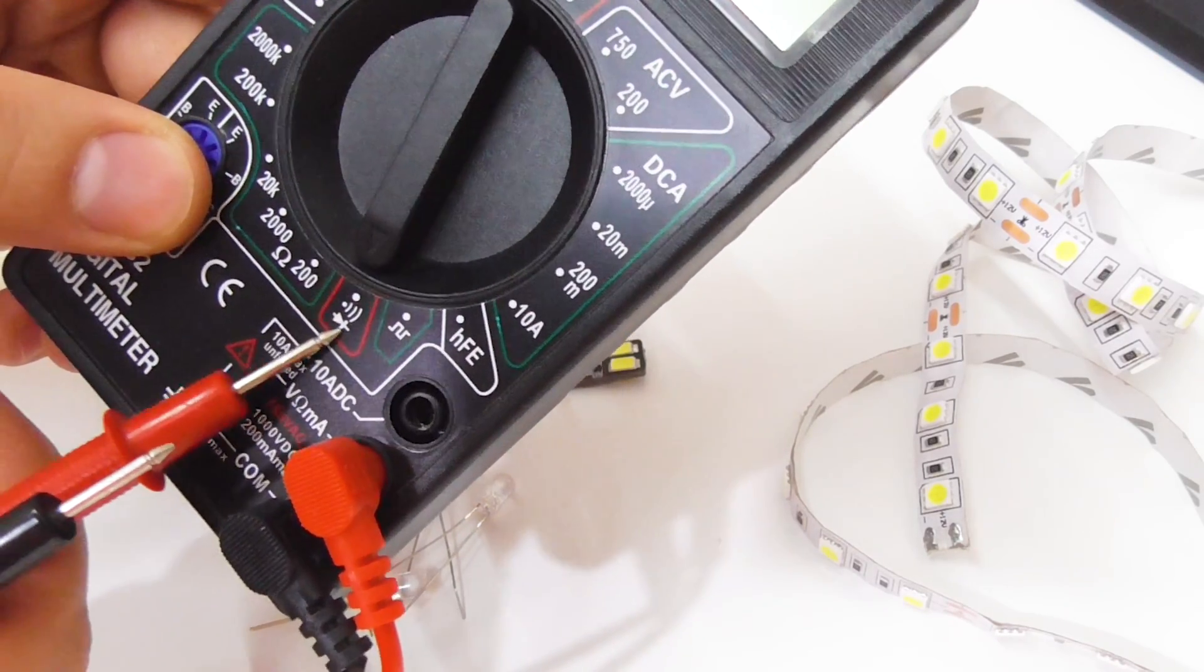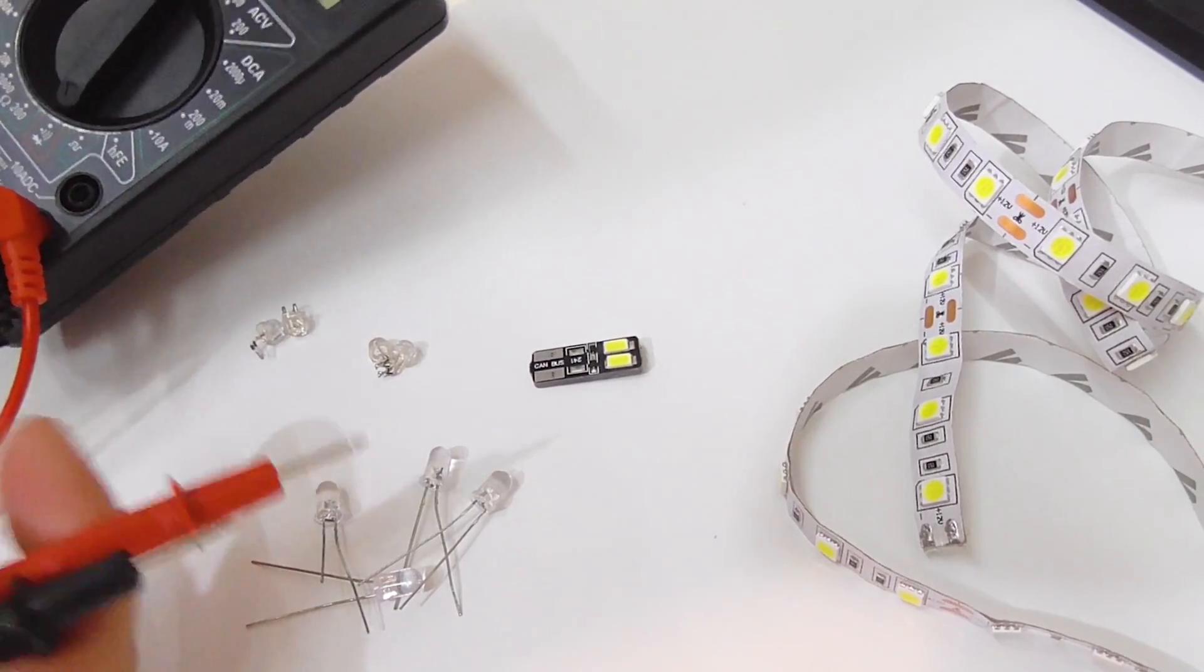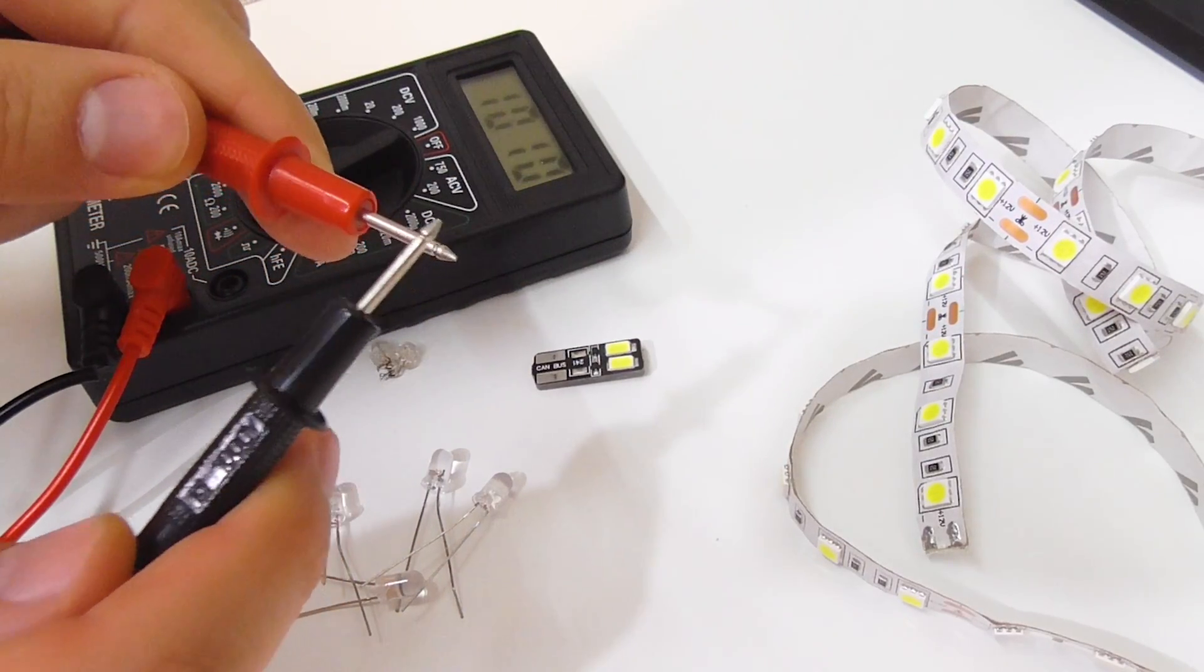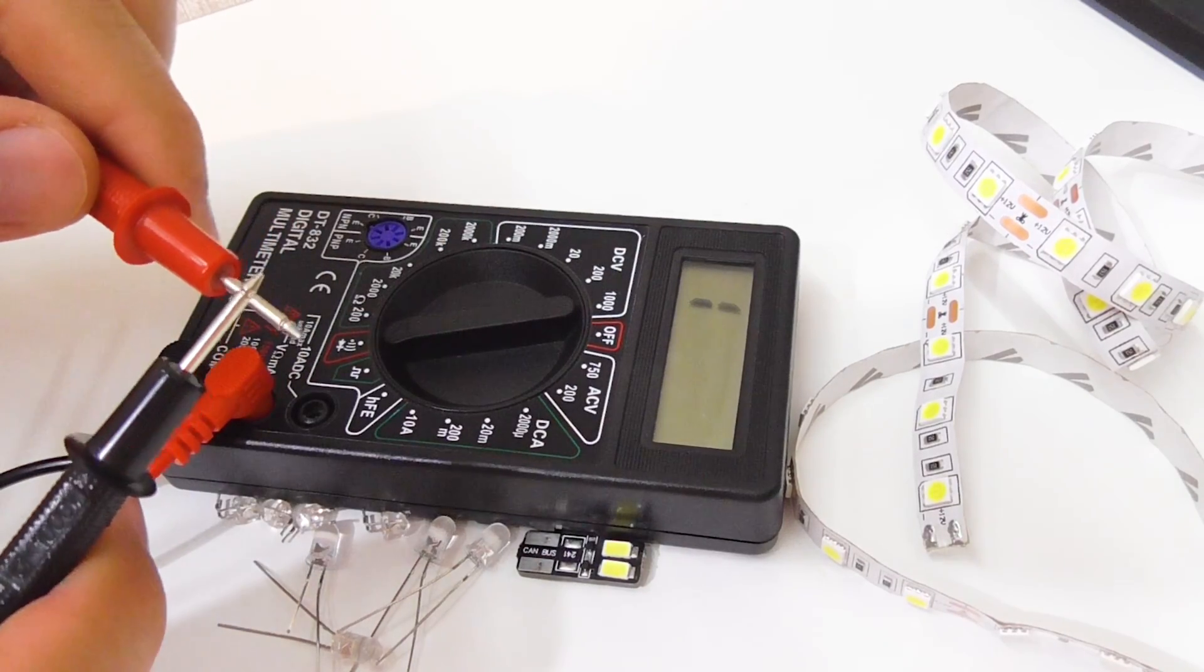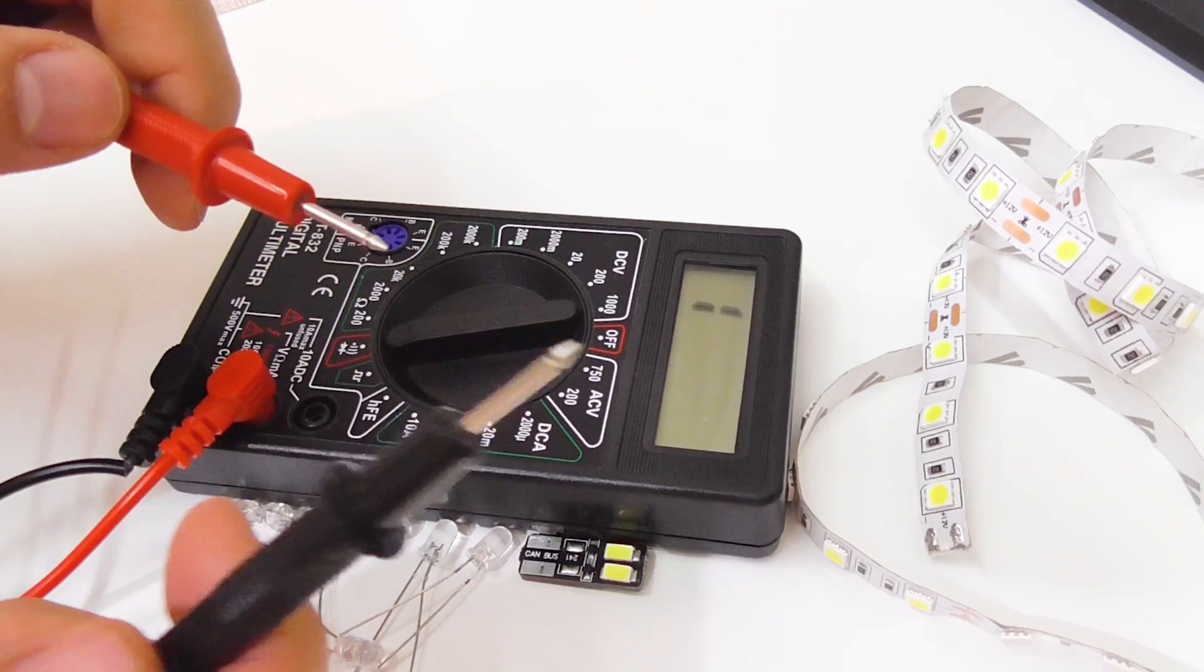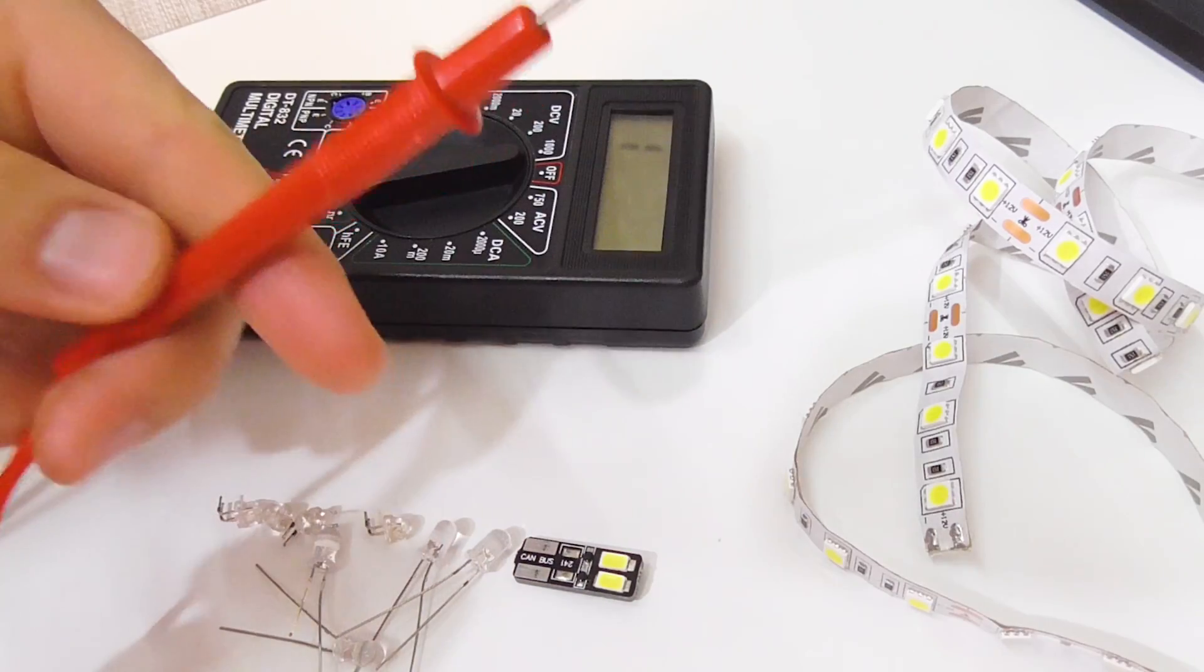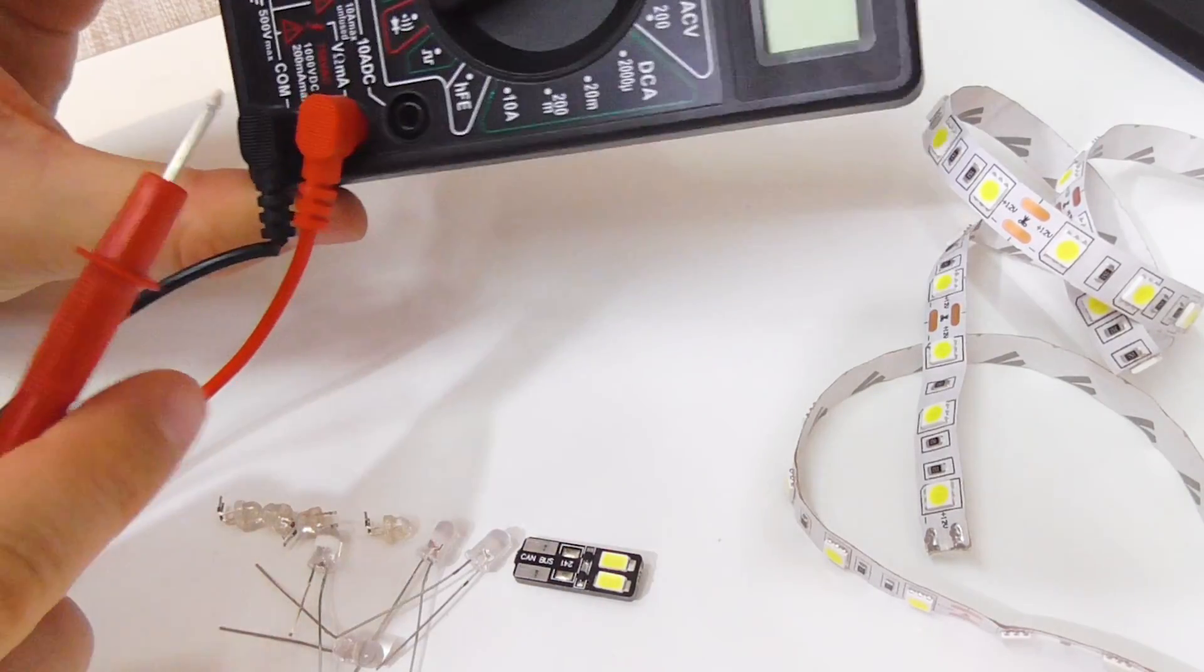So LEDs are light-emitting diodes and this is also a diode. If I just touch these, it's making a sound plus the numbers go down to zero. Zero means perfect conduction between this and that. It has a positive, a red, and a negative, a black.